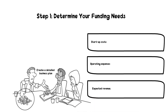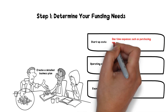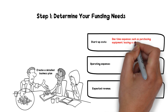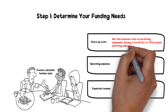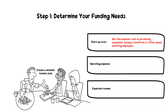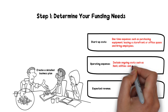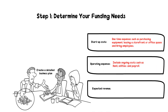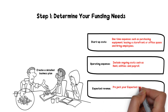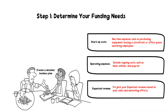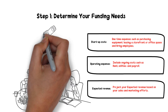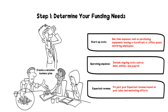Your startup costs will include one-time expenses such as purchasing equipment, leasing a storefront or office space, and hiring employees. Your operating expenses will include ongoing costs such as rent, utilities, and payroll. Finally, you'll need to project your expected revenue based on your sales and marketing efforts. Once you have a clear picture of your funding needs, you'll be able to start exploring potential sources of funding.